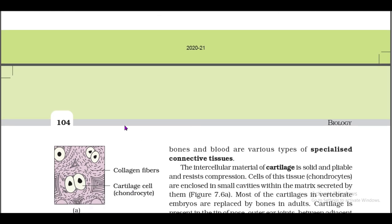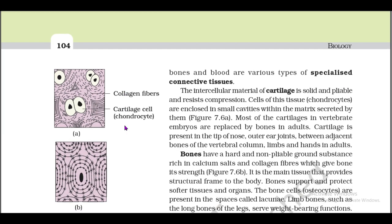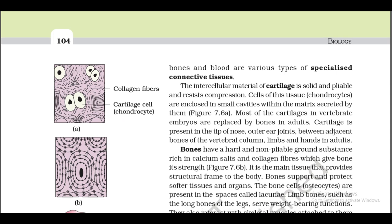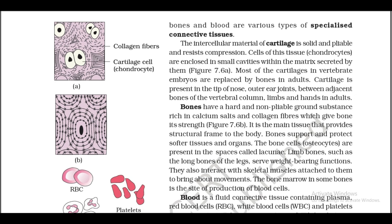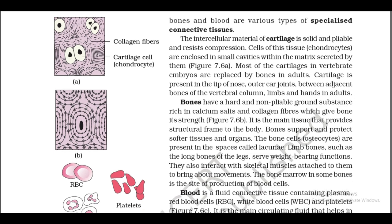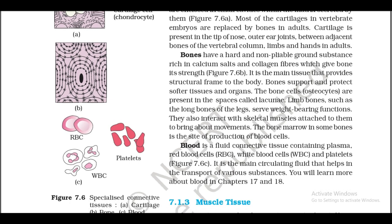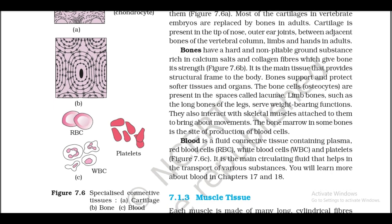Cartilage, bones, and blood are various types of specialized connective tissues. The intercellular material of cartilage is solid and pliable and resists compression. Cells of cartilage, called chondrocytes, are enclosed in small cavities within the matrix secreted by them (figure 7.6a). Most of the cartilage in vertebrate embryos is replaced by bones in adults. Cartilage is present in the tip of the nose, outer ear, joints between adjacent bones of the vertebral column, limbs, and hands.